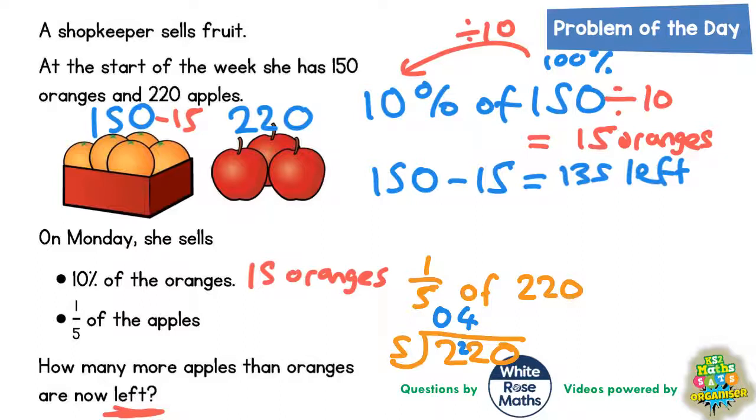4 times 5 is 20, so that's 2 left over. And 5s into 20 goes 4 times. So if she's selling a fifth of the apples, that means she's selling 44 apples.